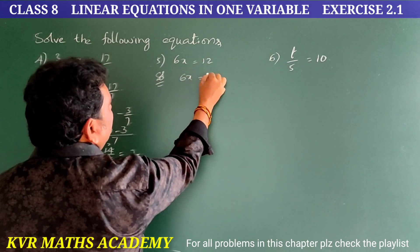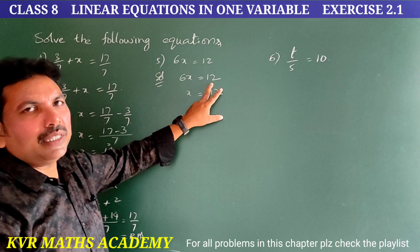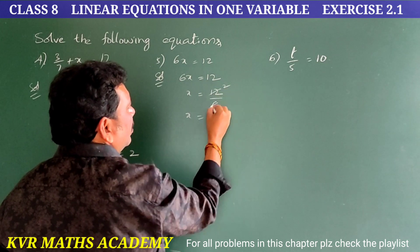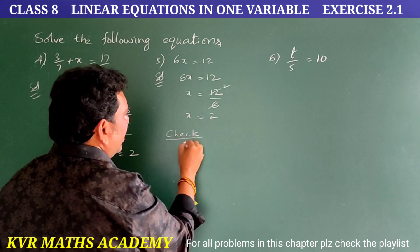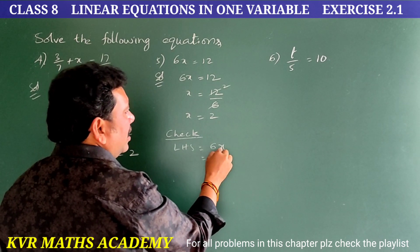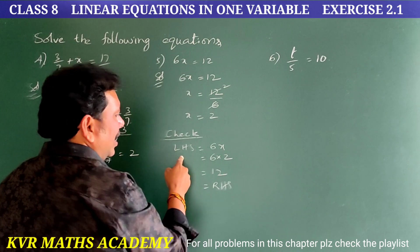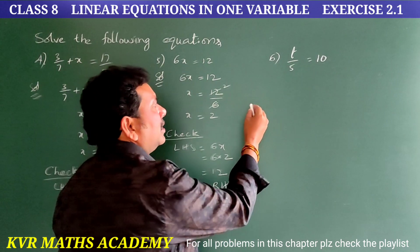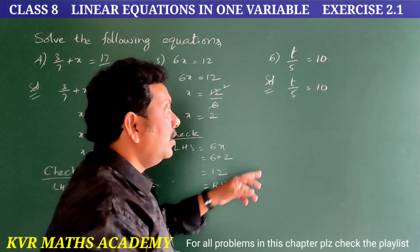Fifth solution. Given: 6x equals 12. Transposing 6 to the other side gives x equals 12/6 equals 2. Check: LHS equals 6x equals 6 into 2 equals 12, which equals RHS. So LHS equals RHS, hence the solution is x equals 2.